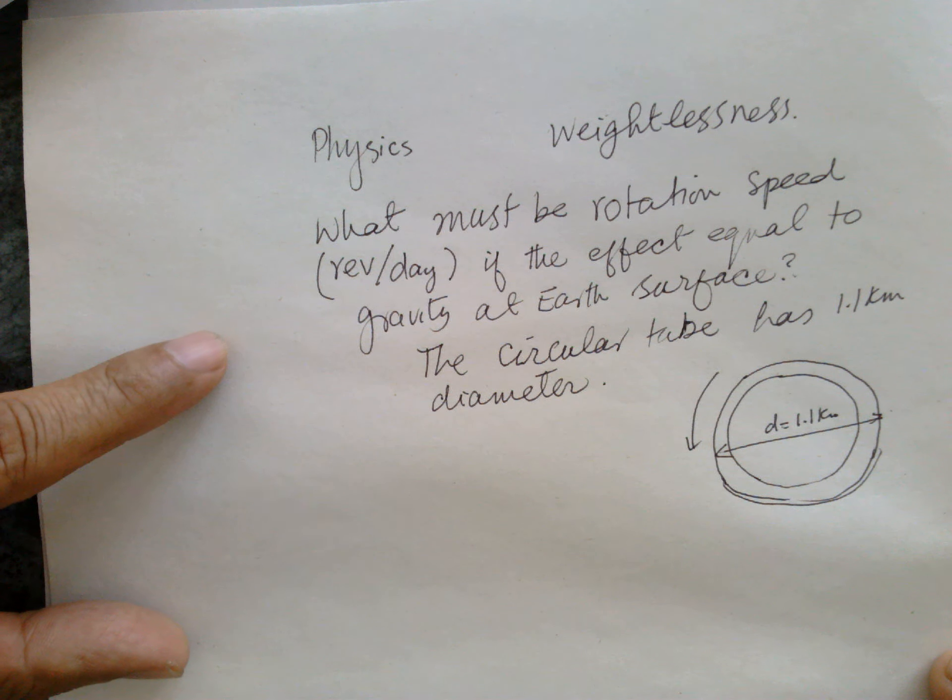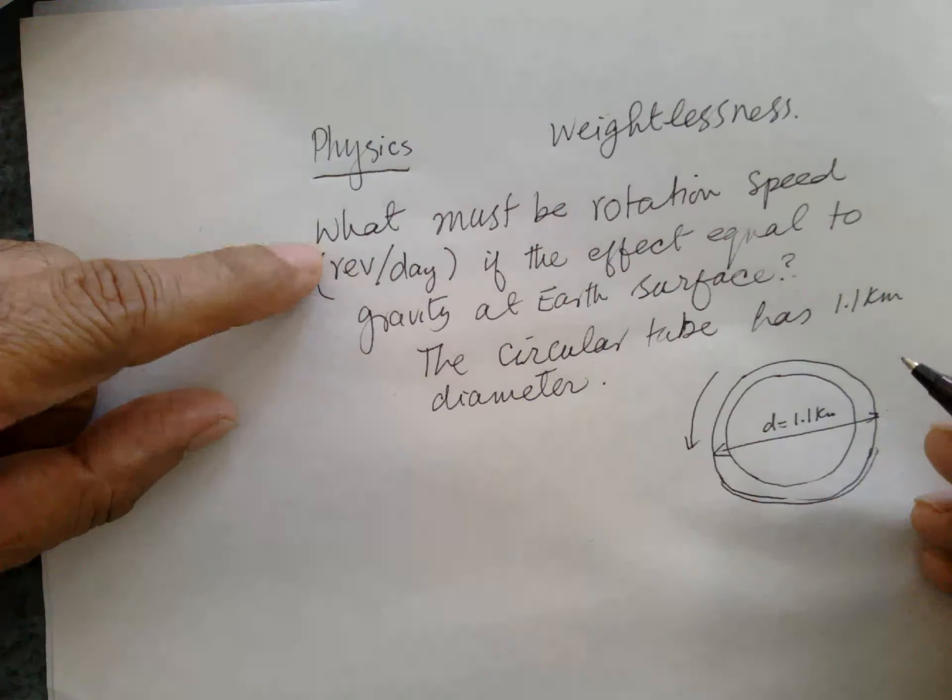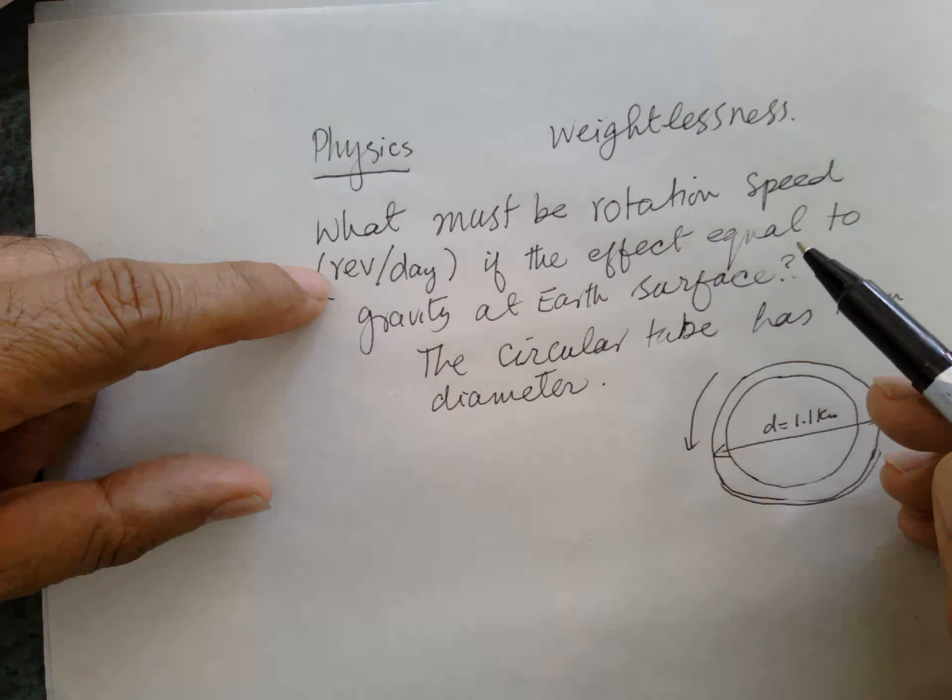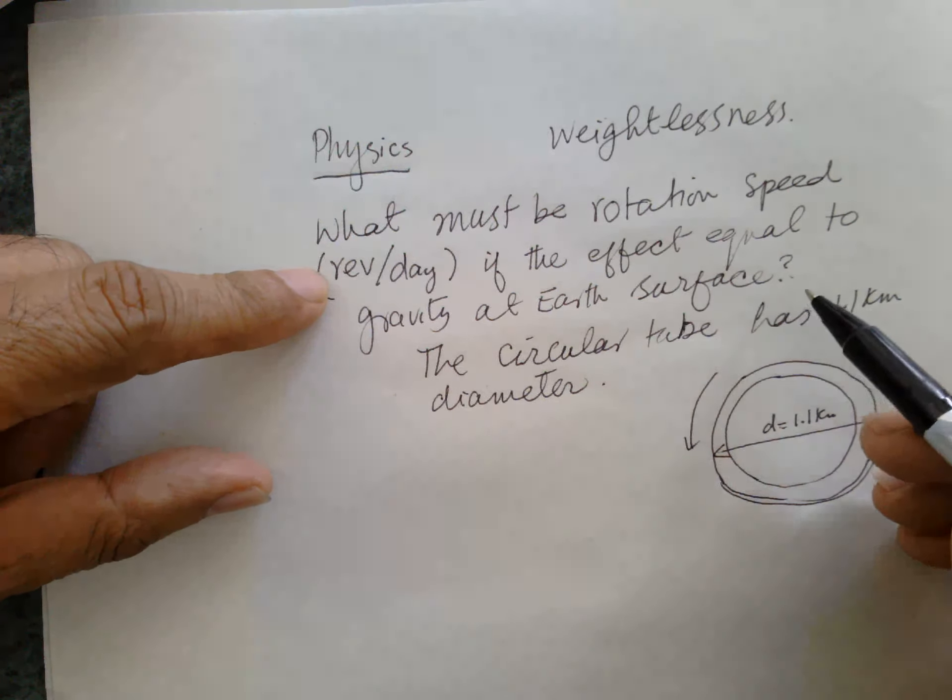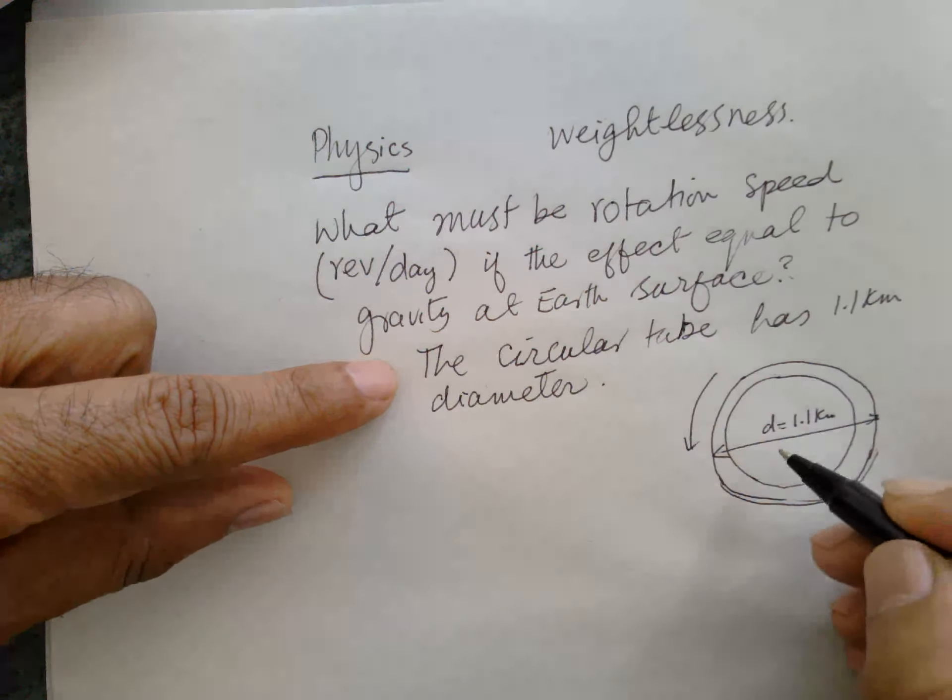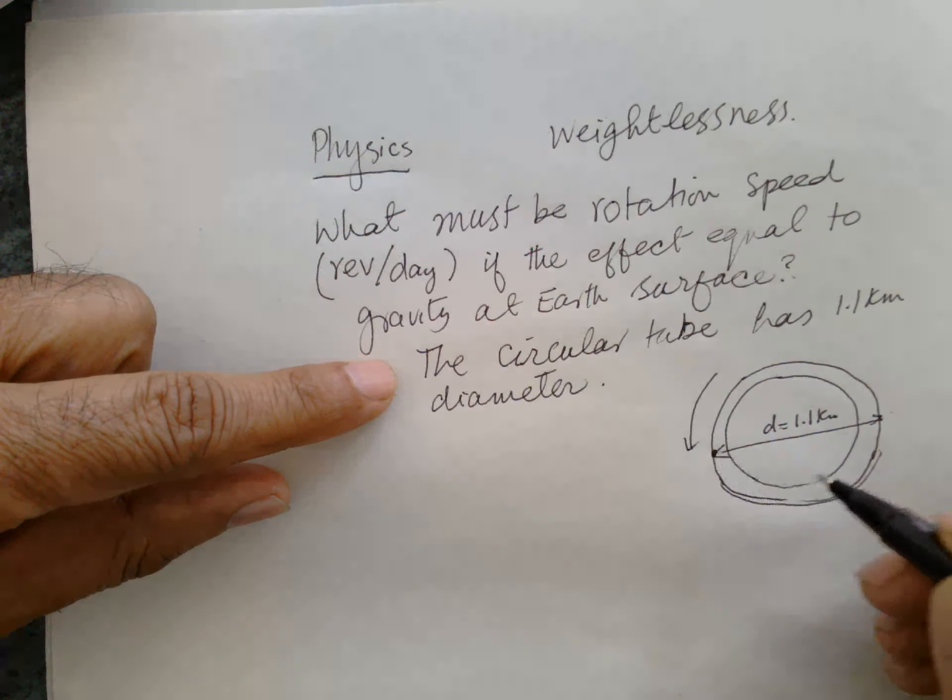Hello, this is a problem of weightlessness. What must be the rotation speed in revolution per day if the effect equal to gravity at the Earth's surface is experienced by the circular tube which has a 1.1 kilometer diameter?